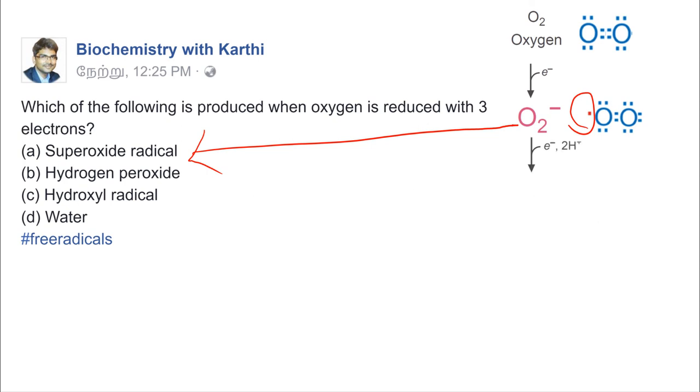If this superoxide again accepts another electron, obviously now this will become paired, so obviously this will not be a free radical. You are getting hydrogen peroxide. Why? Because in addition to electron, it is also gaining two protons.